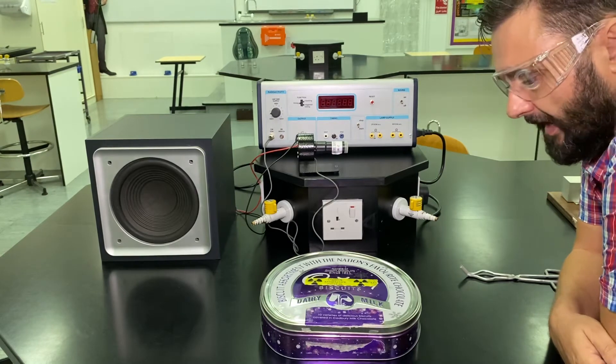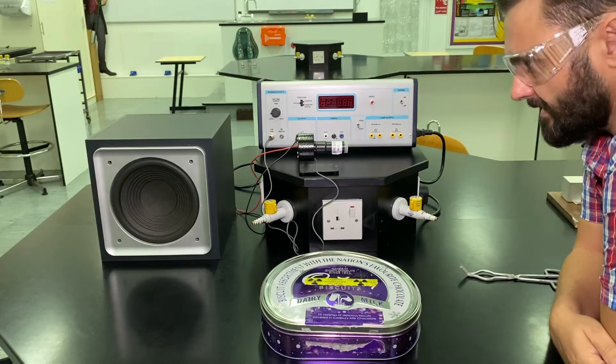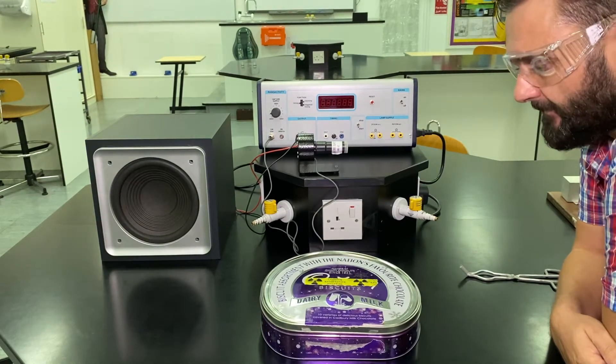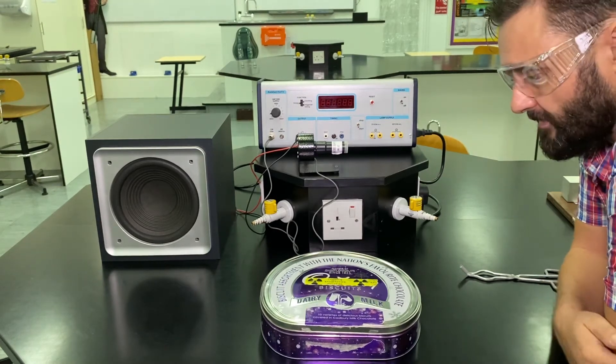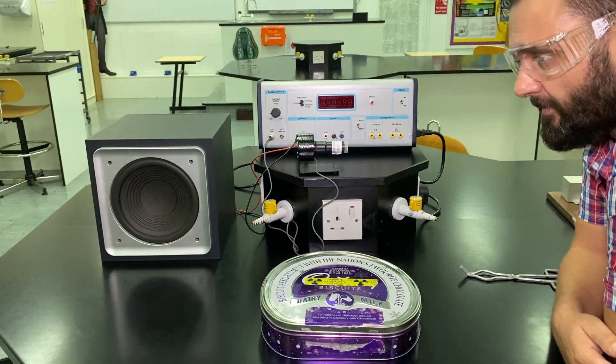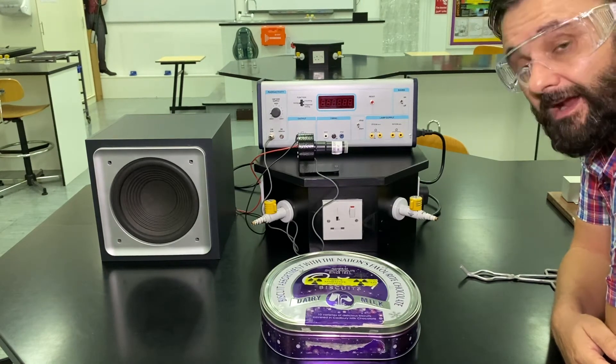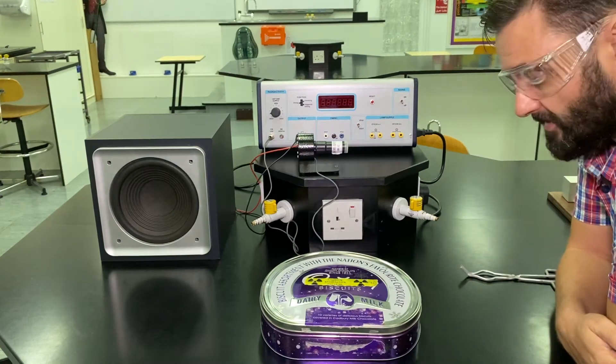But what we are allowed is some radioactive rocks or radioactive minerals. Because like I said, radioactivity is a natural phenomenon. Radioactive isotopes occur naturally in nature all over the place. Now some parts of the world and some countries, the rocks are slightly more radioactive than normal. And these are samples of some of those rocks.